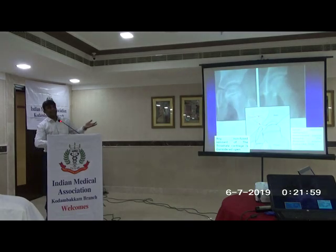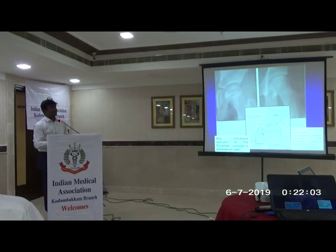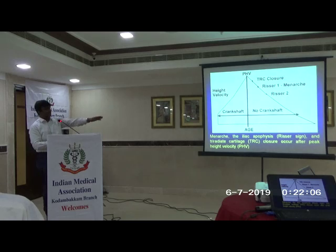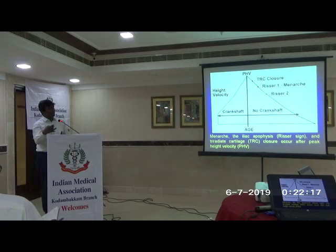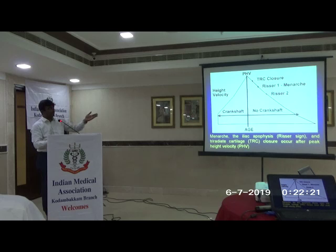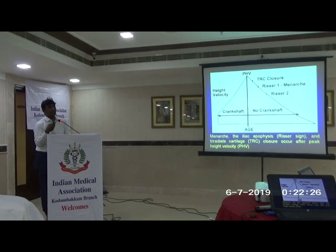Another sign is the tri-radiate cartilage, visible on a simple pelvic X-ray. If it is an open tri-radiate cartilage, the spine is still growing. Every girl or boy during adolescence has a peak height growth velocity — we want to know whether they are before or after that stage, by clinical examination and radiology. If the tri-radiate cartilage is closed and it is a post-menarchal child, then the surgery indication becomes less.